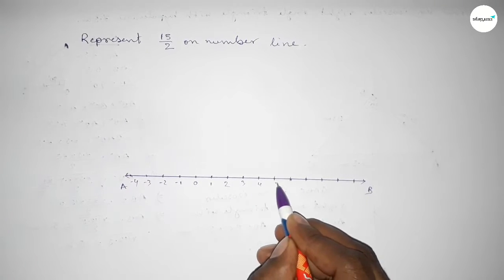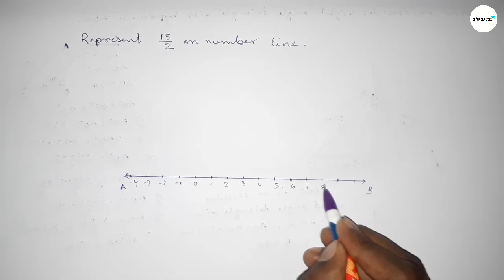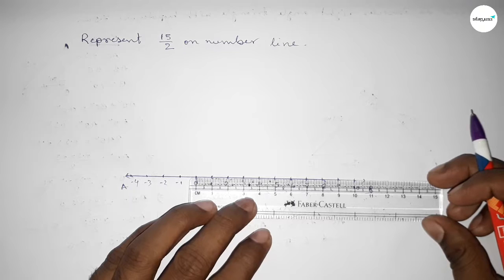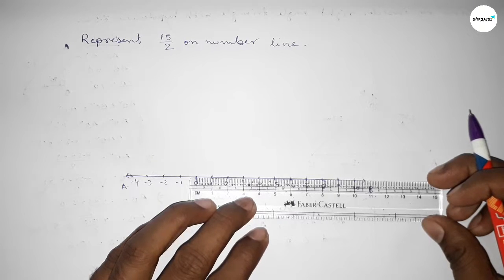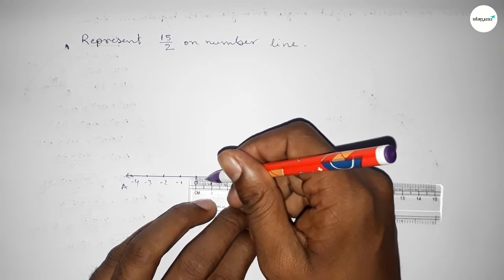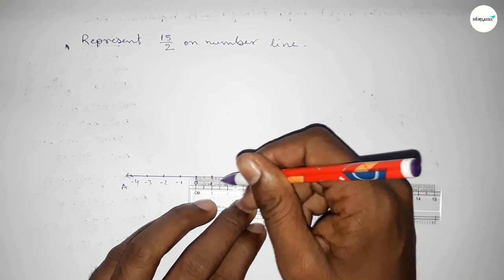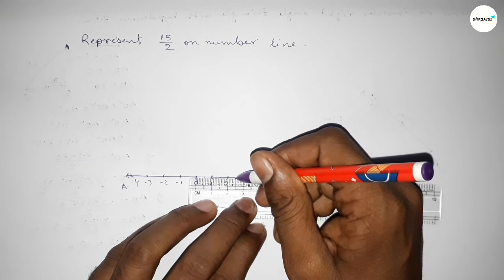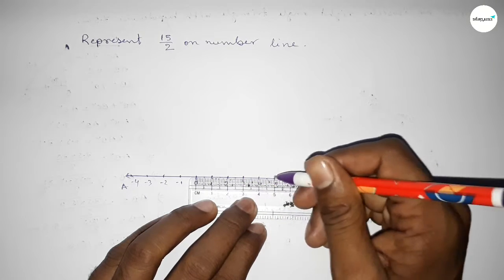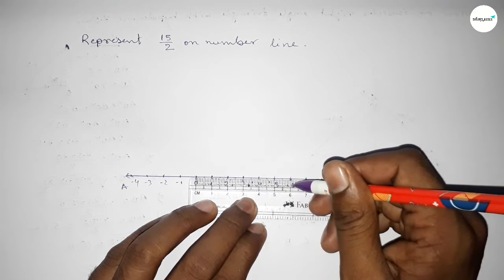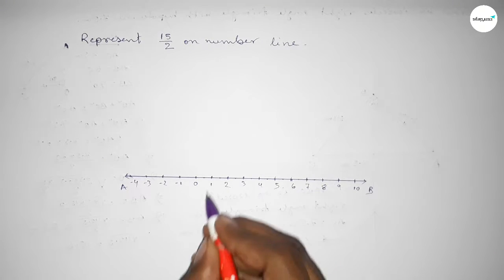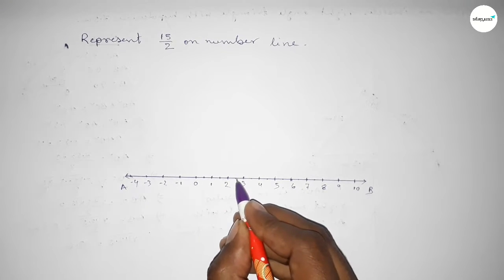One, two, three, four, five, six, seven, eight, nine, ten. Now we have to divide the distance between any two numbers — zero to one, one to two — taking half of each length between any two numbers. So this is half, and this is half, and so on for each interval.